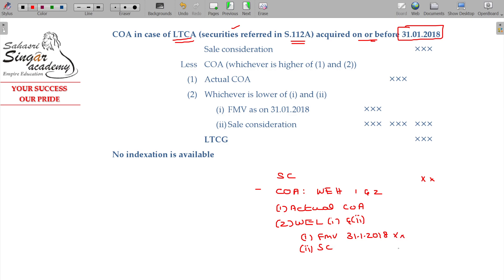That will be subtracted from the sale consideration. You will get long-term capital gain. This is the indexation. That is the 31.1.2018.